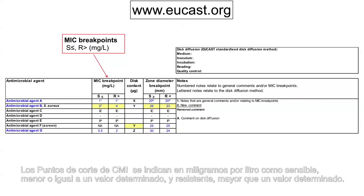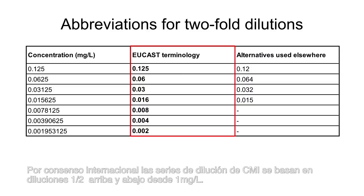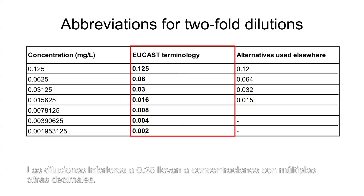MIC breakpoints are expressed in mg per litre as susceptible, less than or equal to a value, and resistant, greater than a value. By international convention, MIC dilution series are based on two-fold dilutions up or down from 1 mg per litre. At dilutions below 0.25, this leads to concentrations with multiple decimal places.